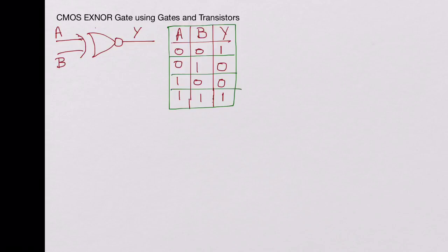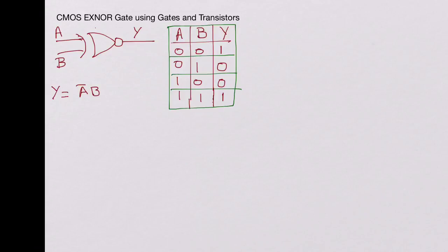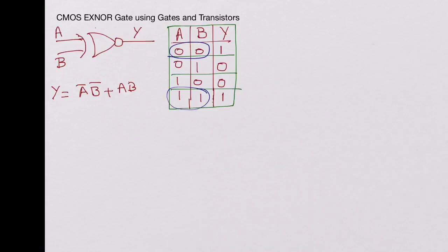Now let's write the equation for Y. Y equals Ā·B̄ plus A·B. We get this because Y is high when A=0, B=0 (giving the Ā·B̄ term) and when A=1, B=1 (giving the A·B term).